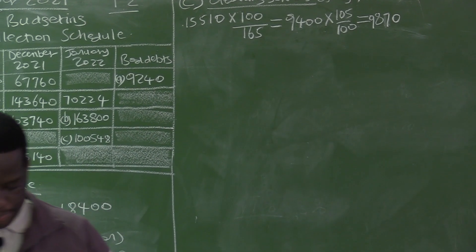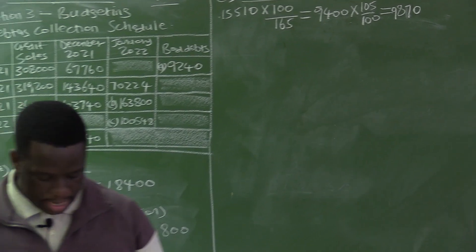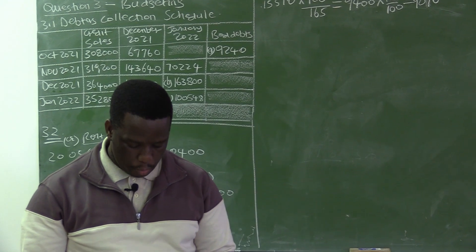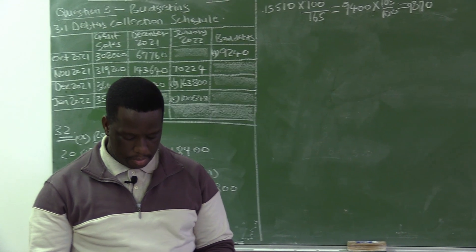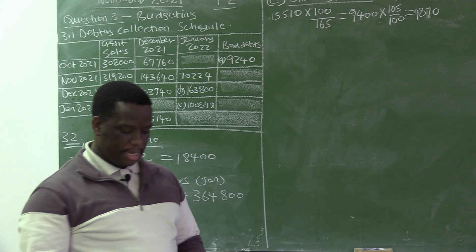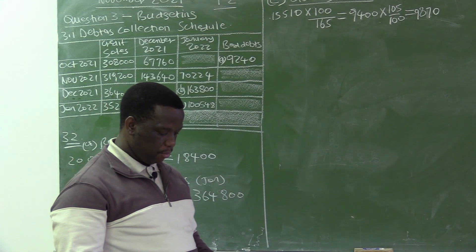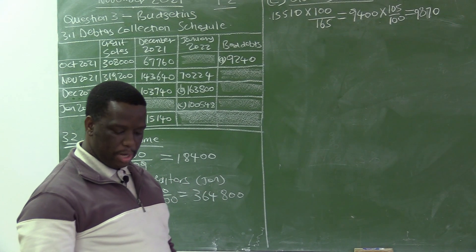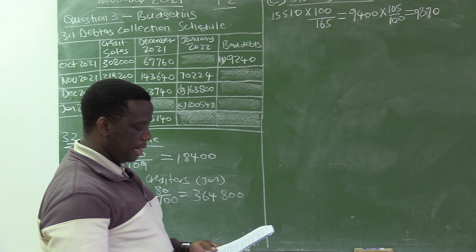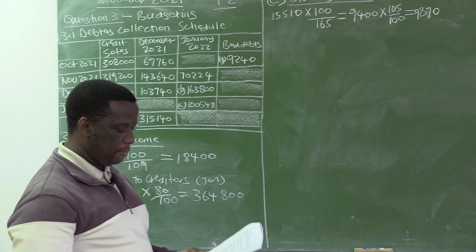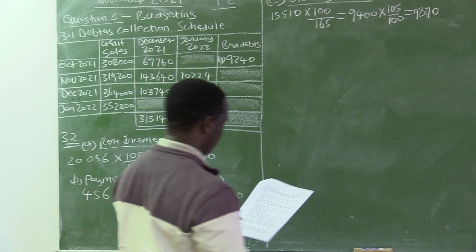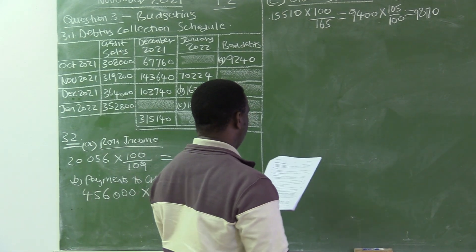We are done with 3.2, which was the cash budget. We had to calculate the amounts missing in the cash budget from A to C.